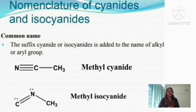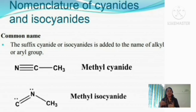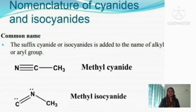For example, CH₃CN is a cyanide with a one-carbon alkyl group (methyl), so it is named methyl cyanide. If the compound is an isocyanide, CH₃NC, the methyl group is again the alkyl group, so it is named methyl isocyanide as the common name.